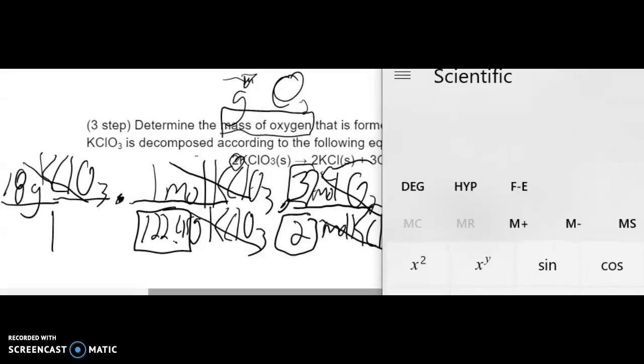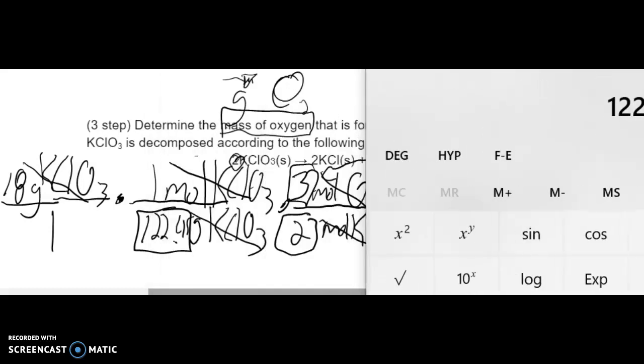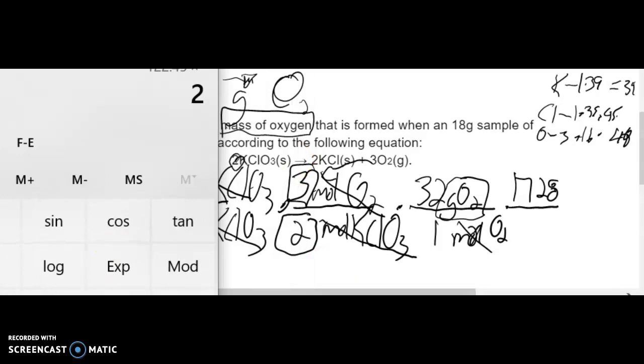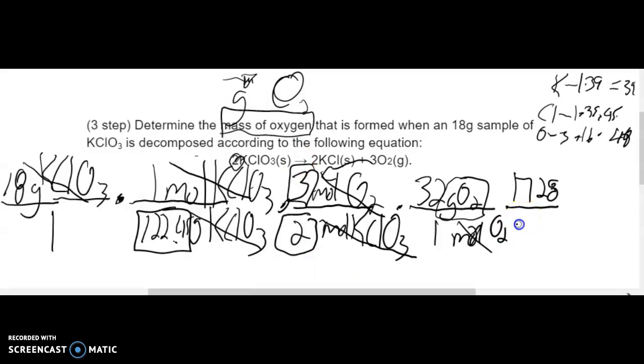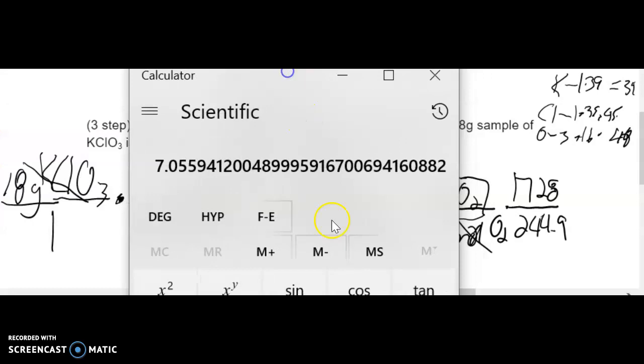My bottom number is going to be 122.45 times 2, times 1. So 244.9. I'm just going to do the top divided by the bottom.